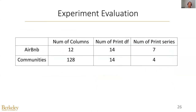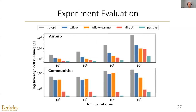We performed our experiments on two datasets and two notebooks from Kaggle. The first dataset includes 12 columns and the second includes 128 columns. We varied the number of rows in our experiments. We increased the number of rows and added the system operations one by one. We can see that our system operations can significantly reduce the execution time. However, for large dataset sizes, it still takes non-trivial time to return the recommendations.